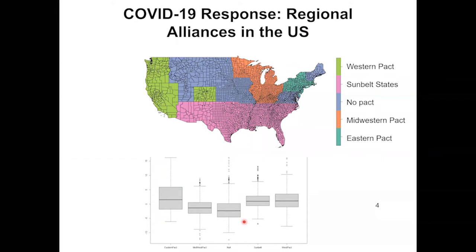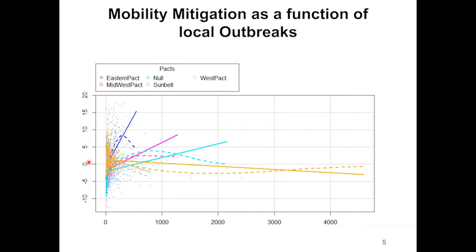But is that a function of unemployment or local infection rates? For that, we divide our data into the regional PACs and alliances that were formed as a result of the COVID-19 pandemic. We can see the Eastern PAC states stayed at home way more compared to the Midwestern PACs or the unaffiliated states.